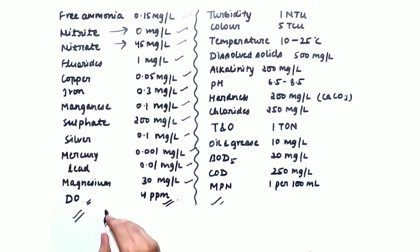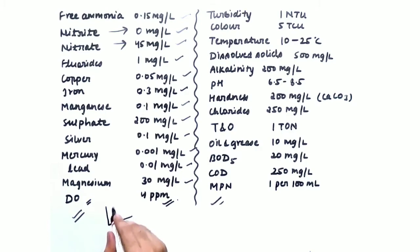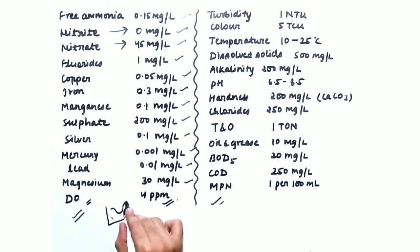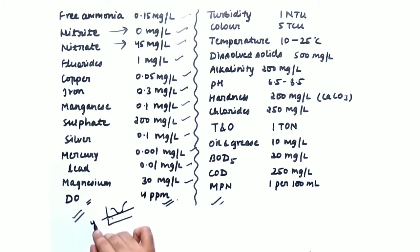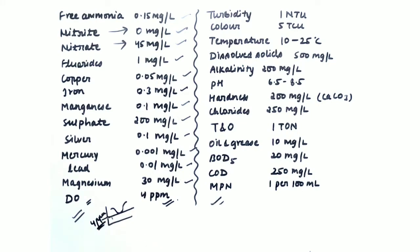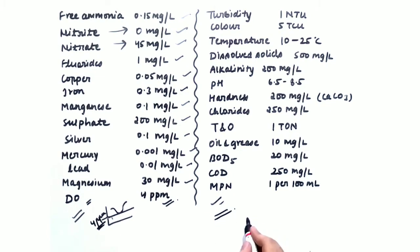In a previous video I explained the SAC curve, where the oxygen deficit is relevant. Dissolved oxygen should be greater than 4 ppm, because below this value aquatic life will be endangered. Now moving on to the second portion of the table — the properties.